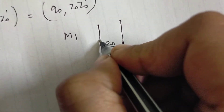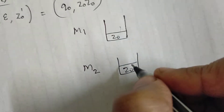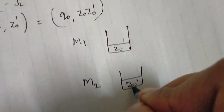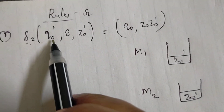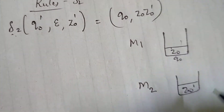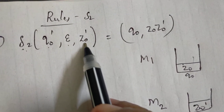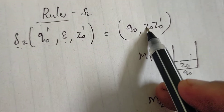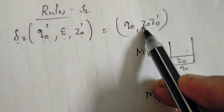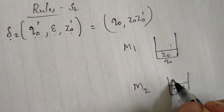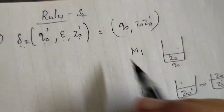In M2, z0-prime is already defined as the bottom of the stack. We push z0 onto the stack in the first step. This means z0, z0-prime are on the stack. Z0-prime is already in M2 as the bottom of the stack.